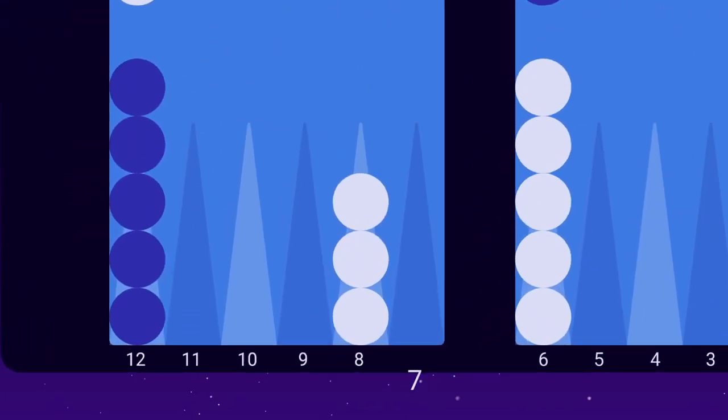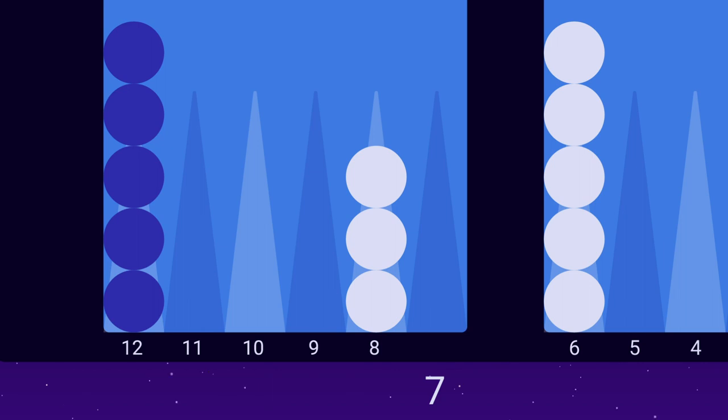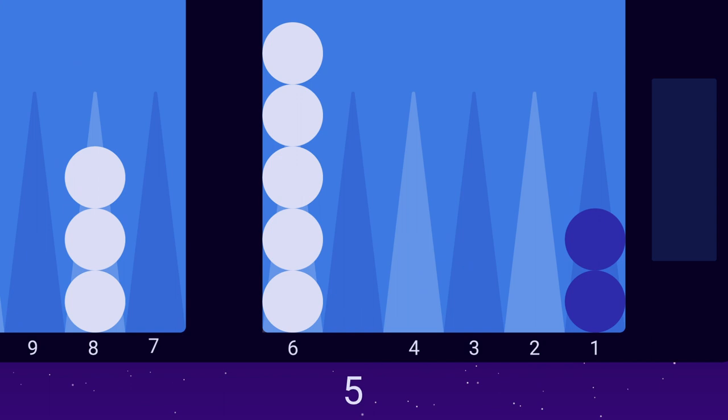A lot of beginners believe the seven point is the most valuable point to make. This is false. The most valuable point is the five point, often referred to as the golden point.